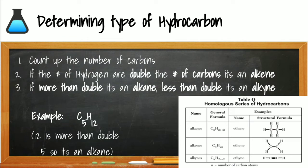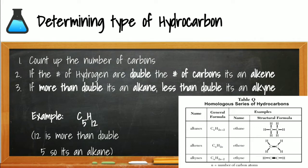One more detail given about hydrocarbons on reference table Q is the general formula, which uses the variable N. Alkanes have 2N plus 2 hydrogens for every N carbons. Alkenes simply have 2N hydrogens, and alkynes have 2N minus 2 hydrogens. As a general rule: if you have exactly double the hydrogens, you're an alkene; if you have more than double, you're an alkane; and if you have less than double, you're an alkyne.